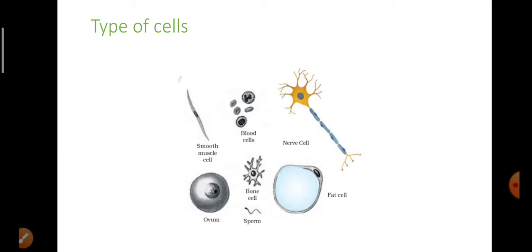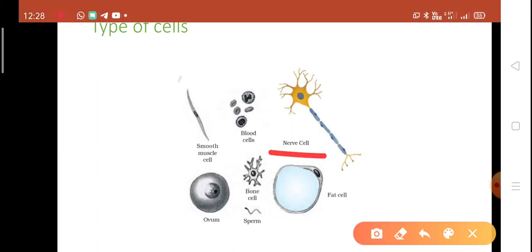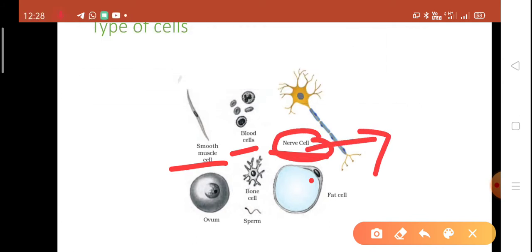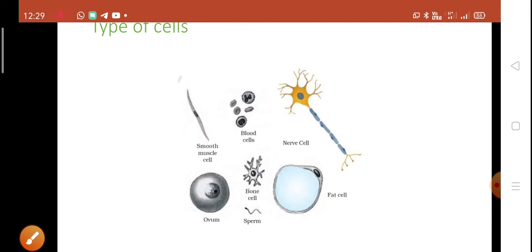In our body, we have different types of cells. You can see here, this is the nerve cell, this is the blood cell, and this is the muscle cell. Nerve cells are found in our nerves. Blood cells are found in our blood—red blood cells, white blood cells, and plasma also. Muscle cells are found in our body.